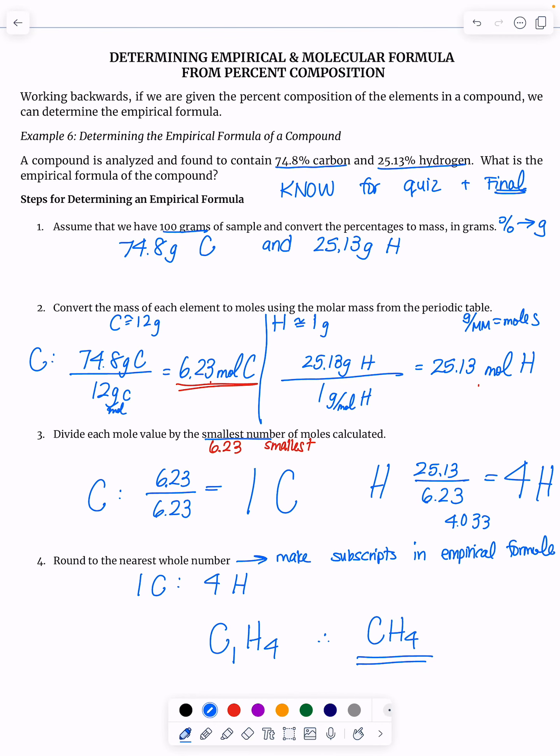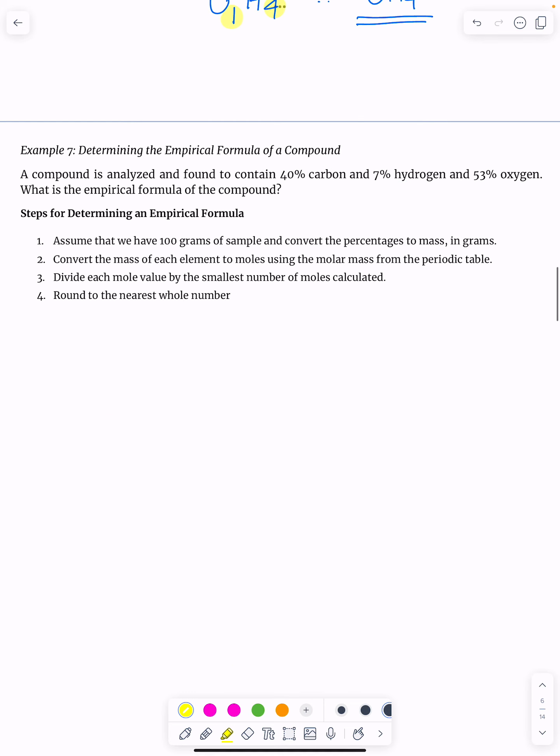there are four steps to determining an empirical formula. If I take these percentages, I turn them directly into grams. Then I convert those grams to moles. Then I divide by the smallest moles. And then with those numbers that I get, like I got the one and I got the four, I write those as subscripts to write an empirical formula. You could try doing question seven on your own to check to make sure that you understand this.